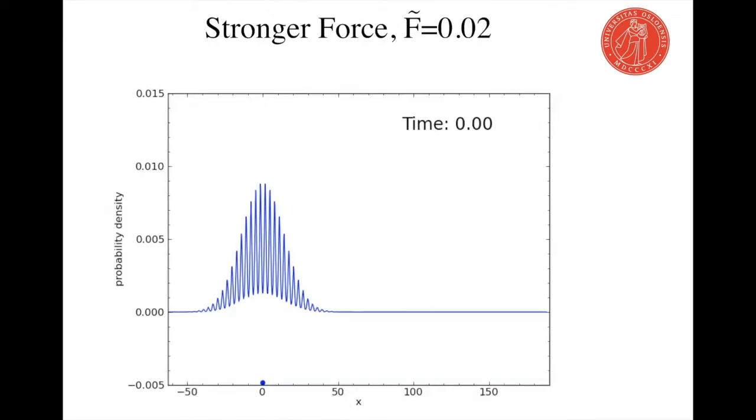Let's see what happens when we double the force. The particle oscillates twice as fast while the amplitude is down by a factor of two.